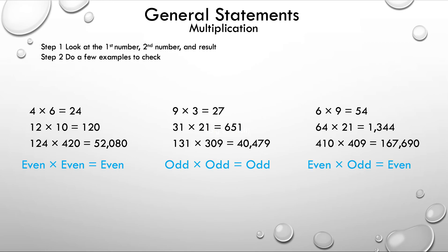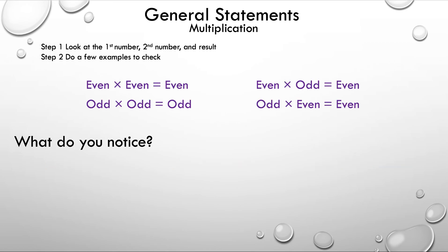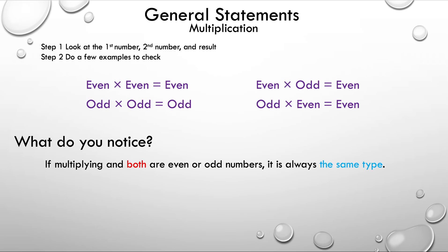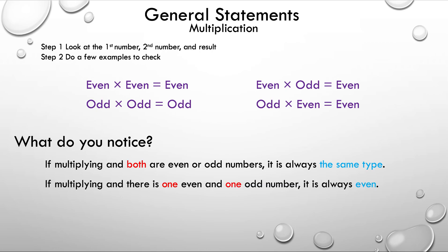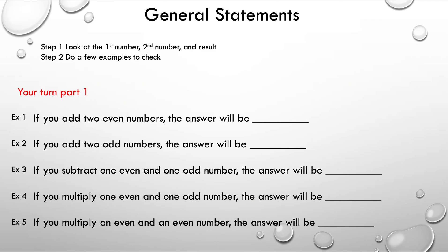We have enough different examples, so the rule is: even times odd is equal to even. You may be thinking what happens if you flip it — well, odd times even is equal to even, and I'll let you verify that. So we have four general statements for multiplication. The first: multiplying two numbers that are both even or both odd always gives the same type. The second: multiplying one even and one odd number is always even.